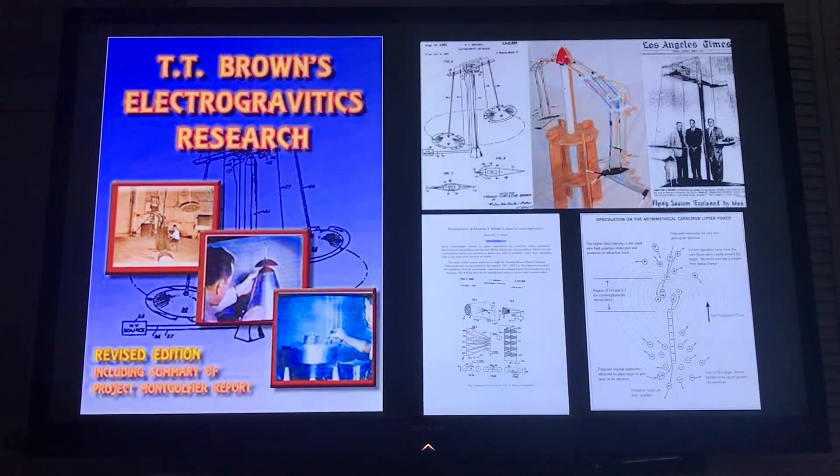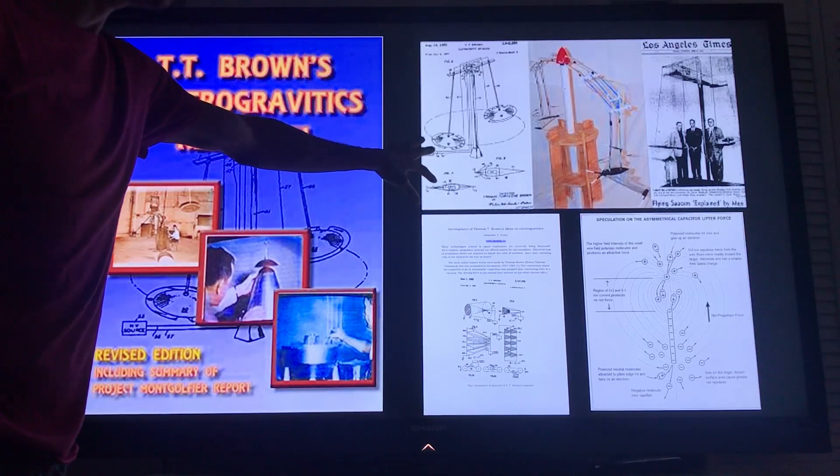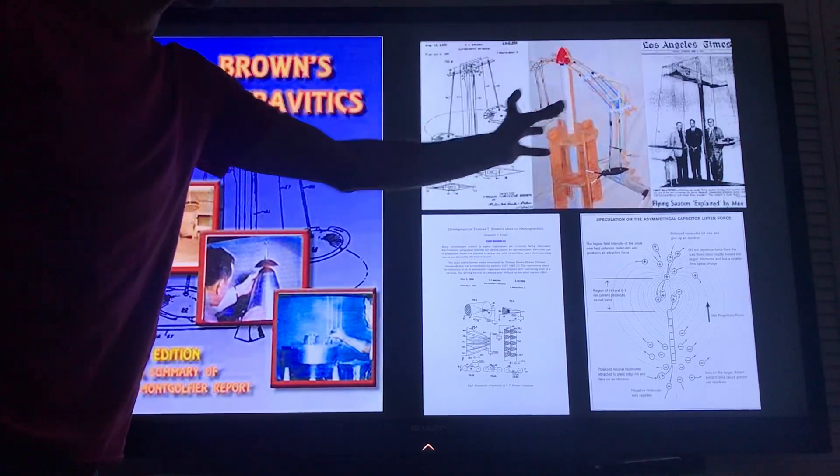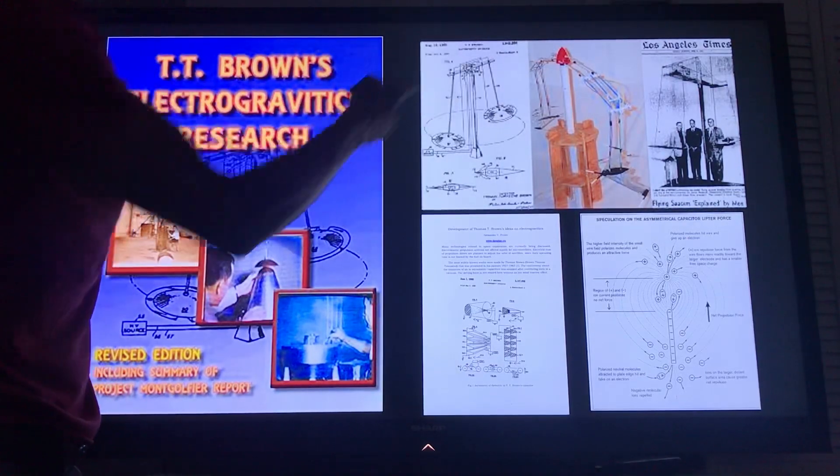Okay so this is his book, Thomas Townsend Brown's Electrogravitics Research. Here you can see some of his original models that he made. Here you can see him actually standing next to one of them and those systems would basically use electrogravitics and they would rotate around the center of that pole.